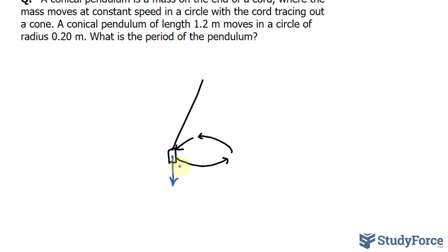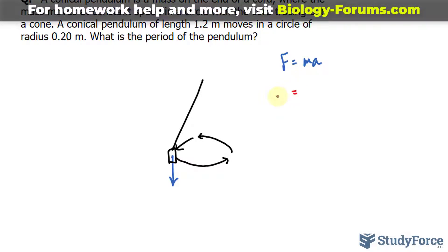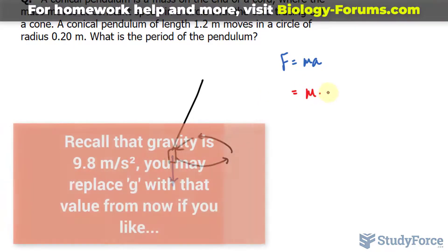The force due to gravity can be found using the formula F equals Ma, where that is Newton's second law. And rather than using A, we use G, because G represents the acceleration due to gravity. So I'll write down mass times gravity.